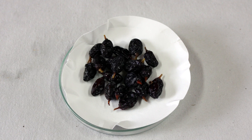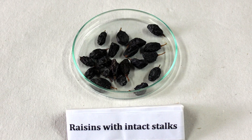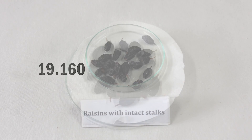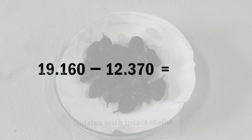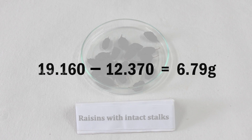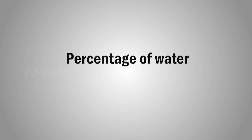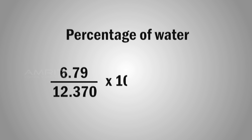Therefore, the weight of the water absorbed by the raisins can be calculated by subtracting the weight of the dry raisins from the weight of the swollen raisins. 19.160 - 12.370 = 6.79 g. The percentage of water absorbed by the raisins is equal to 6.79 divided by 12.370 times 100, which is 54.89%.